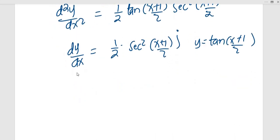So this and that. So we see that d²y/dx² is therefore equal to tan (x+1)/2, which is y, times a half sec squared (x+1)/2, which is dy/dx, therefore proved as required.